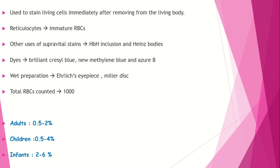Common supravital stains are brilliant cresyl blue, new methylene blue, and Azure B. In wet preparation, 1000 RBCs are counted. To reduce the field of vision, Ehrlich's eyepiece or Miller disk is used. Normal reticulocyte ranges: adults 0.5–2%, children 0.5–4%, infants 2–6%.